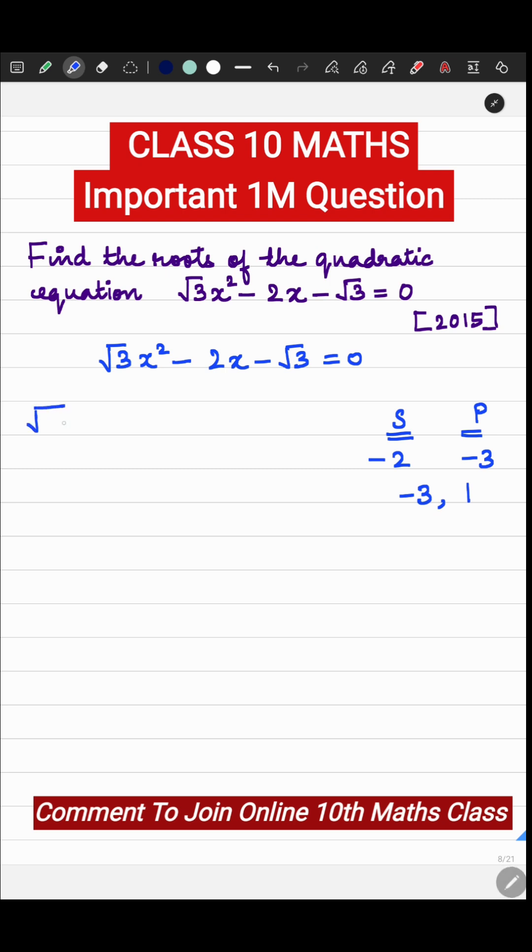Now let's substitute using the middle term splitting. So root 3 x square minus 3x plus 1x or x minus root 3 equal to 0. Take root 3 x common so it will be x minus root 3 plus 1 common x minus root 3 equal to 0.